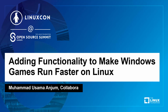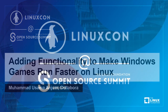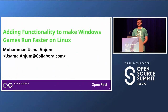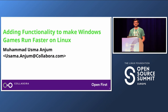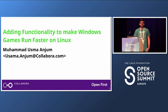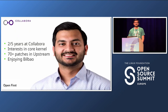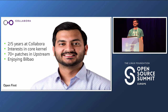Hello. Let's talk about how we are trying to make Linux better for games on Windows. There have been a lot of efforts going on in different areas of the kernel, and I've been working on one. I'm going to tell you in the form of a story — how we found a problem, how we are trying to fix it, and how it is still kind of in progress. I'm Musama. I work for Collabora. I am interested in core kernel, and I'm really enjoying the city here.